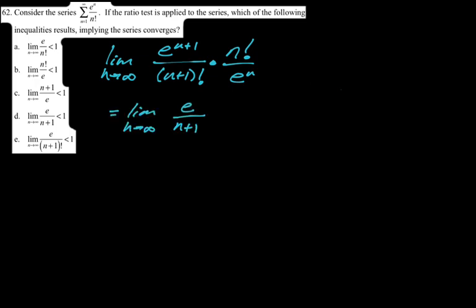All right, next question. Consider the series, the sum from one to infinity of E to the N over N factorial. If the ratio test is applied to the series, which of the following inequalities results implying that the series converges? Okay. So we just got to ratio test, which is like my favorite thing to do. So we do the N plus first term, which is E to the N plus one over the quantity N plus one factorial times the reciprocal of the Nth term, which is N factorial over E to the N. Technically there should be absolute values around that, but everything is positive. So you don't need to worry about that. And then we can cancel the N factorial and N plus one factorial cancels down to one over N plus one. And then the E to the N just canceled to leave us with just E in the numerator. So we are getting the limit as N approaches infinity of E over N plus one. And then that has to be less than one if we're going to converge. So our answer is D.